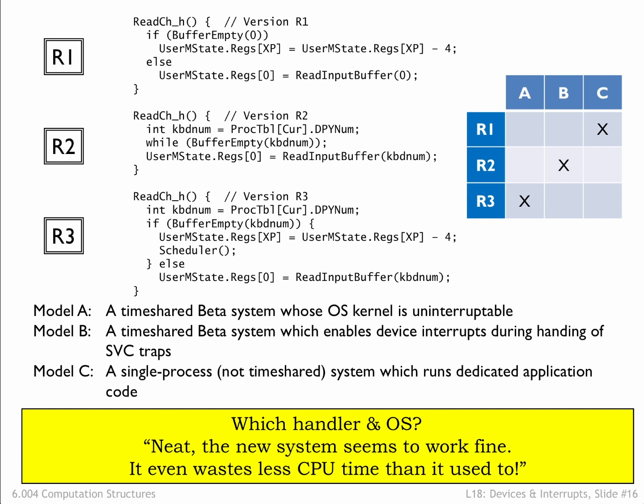The final message reads: 'Neat, the new system seems to work fine. It even wastes less CPU time than it used to.' Since the system works as expected with the new handler, we can eliminate a lot of possibilities. Handler R1 wouldn't work fine on a time-sharing system since the user could tell that the processes were now all reading from the same keyboard buffer, so we can eliminate R1 on models A and B. Handlers R2 and R3 wouldn't work on a Model C system since that doesn't include process tables or scheduling, eliminating the rightmost column. Finally, handler R2 wouldn't work on a Model A system with its uninterruptible kernel since any attempt to read from an empty buffer would cause an infinite loop. So the message must have been sent by a Model B user now running R3. Just like solving the logic puzzles you find in games magazines!